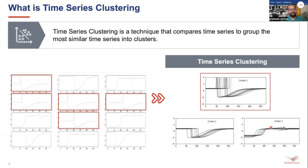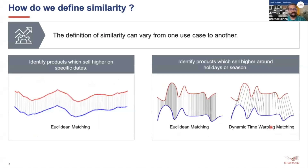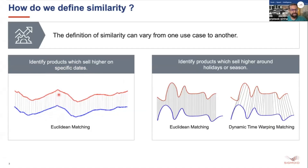But how do we define this similarity? The definition of similarity can vary from one use case to another. For example, for one scenario we need to identify products which sell higher on specific dates. In this scenario the peaks are at the same time points, so we can calculate the distance between points at the same time indices, which is Euclidean matching, and that will serve our purpose.